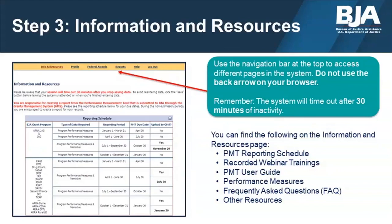If you are a returning user, you will be directed to the Information and Resources page upon logging in. This page gives you access to important documents regarding the grant program, such as the user guide, FAQs, a copy of the performance measures, and any updates. You can access the profile and Information and Resources pages at any time while logged in. Be sure to save often as the PMT will time users out after 30 minutes of inactivity — any data not saved will be erased. Do not use the back or forward buttons on your web browser, as that will produce system errors; instead, use the buttons within the PMT to navigate.